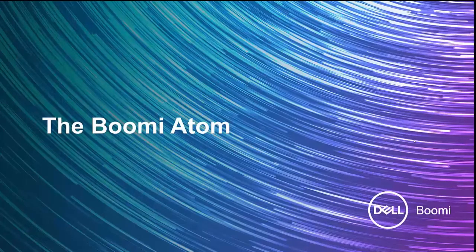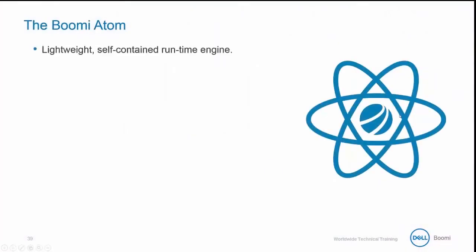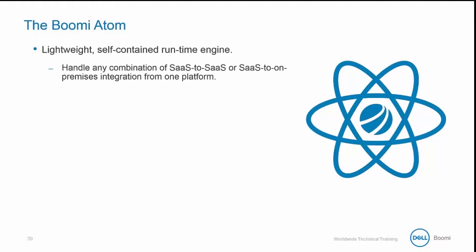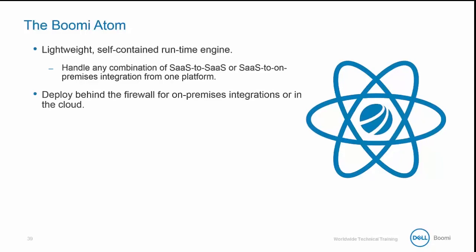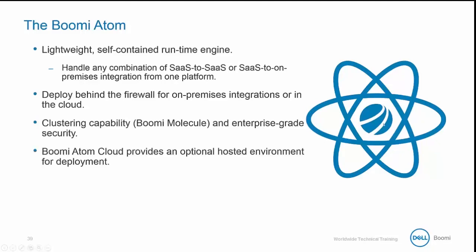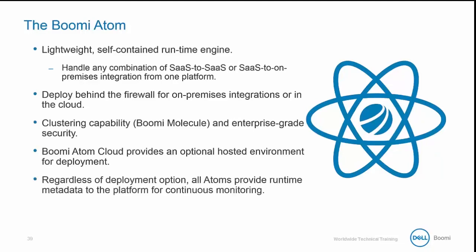It's time to learn more about the runtime engine that runs our processes, otherwise known as the Boomi Atom. The Atom is a lightweight, self-contained runtime engine that can handle any combination of SaaS-to-SaaS or SaaS-to-on-premise integration from a single platform. It can be deployed behind the firewall for on-premise integration or in the cloud. There are built-in clustering capabilities known as the Boomi Molecule and enterprise-grade security. The Boomi Atom Cloud provides an optional hosted environment for deployment, and regardless of deployment option, all atoms provide runtime metadata to the platform for continuous monitoring.